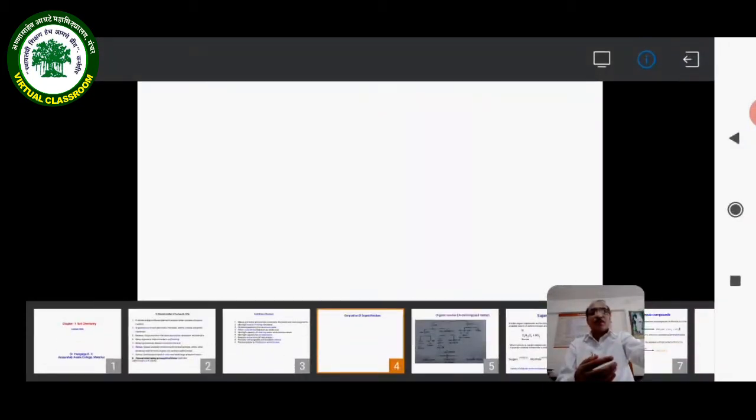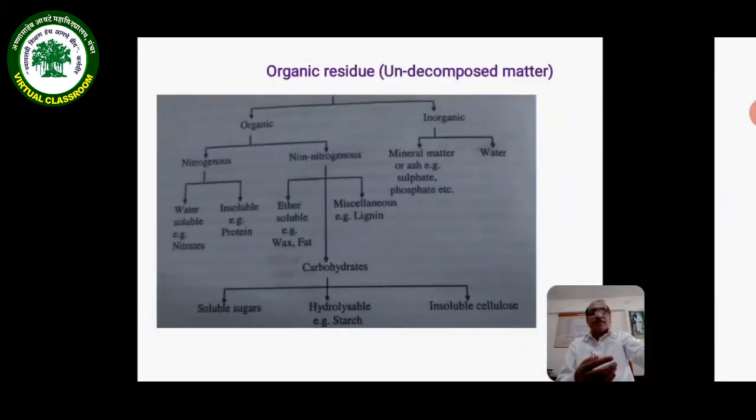We must move to organic residues. Organic residue is divided into organic and inorganic. Under organic, we find nitrogenous and non-nitrogenous. Nitrogenous is further divided into water-soluble nitrates and water-insoluble proteins.